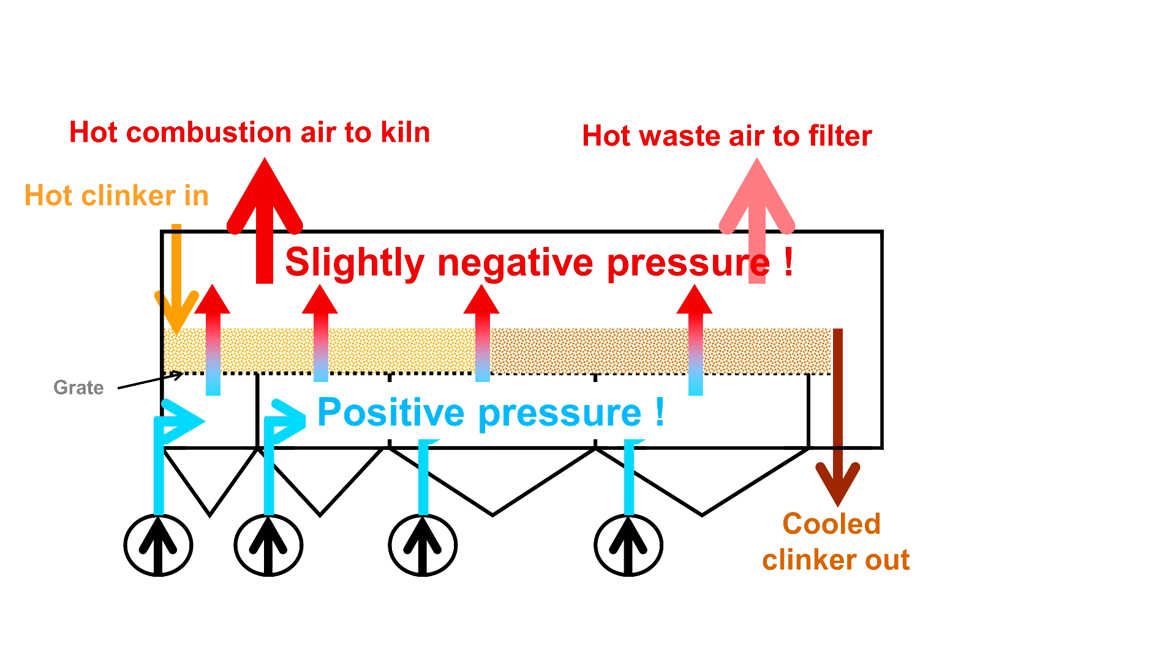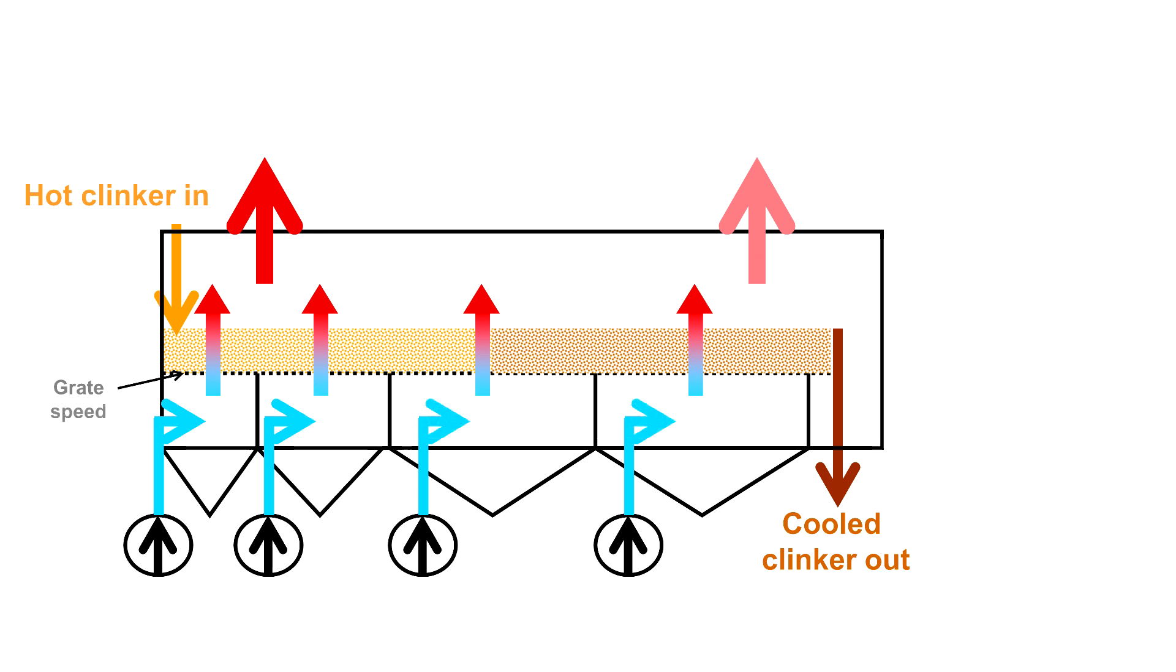There are two main reasons to keep a negative pressure on top of the grate: to avoid blowing clinker dust outside of the cooler, and to limit the intake of false air in the system. The clinker cooler has two main controls. First, the grate speed.